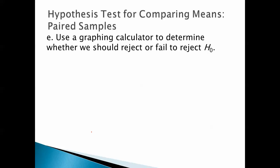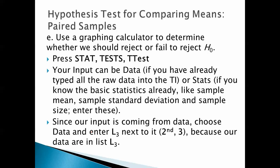Use a graphing calculator to determine whether we should reject or fail to reject H0. This is cool. This makes it so easy. So we press stat, test, t-test. Your input can be data, if you already have typed all the raw data into the TI, or it can be stats, if you know the basic stats already. Since our input is coming from data, choose data and enter L3 next to it. That's second and then three, because our data are in list L3.